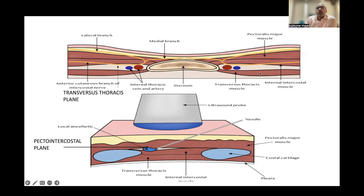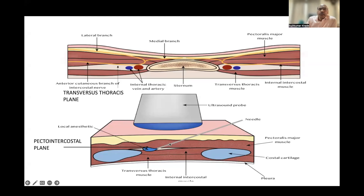This is a transverse view of the sternum in relation to the muscles. This is the transverse thoracic muscle, and this is the internal intercostal muscle. In between lies the internal mammary vessels and the anterior cutaneous nerve, which pierces the internal intercostal muscle and pectoralis major to supply the skin and sternum. This sagittal view shows the same muscles in relation to the costal cartilages.